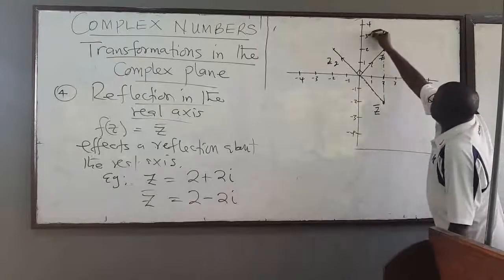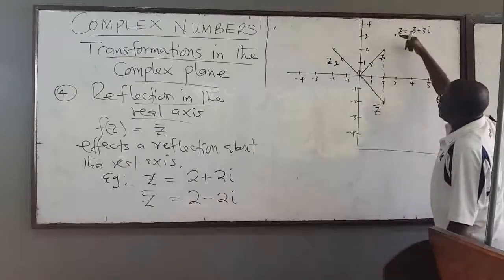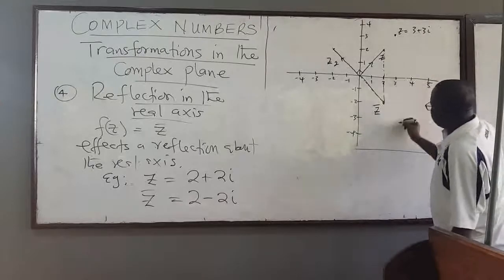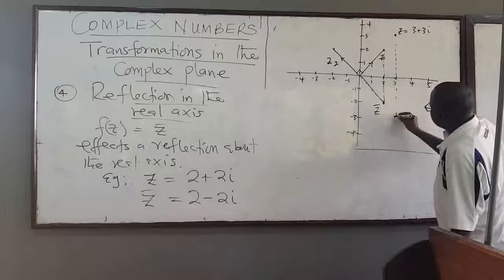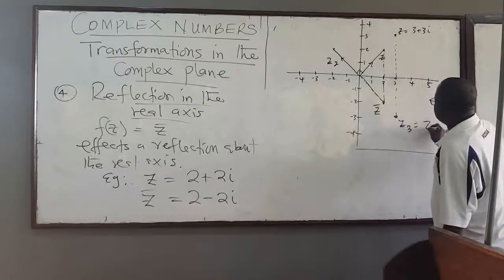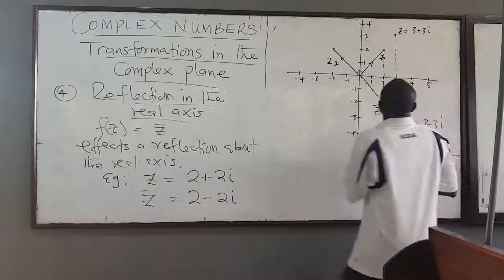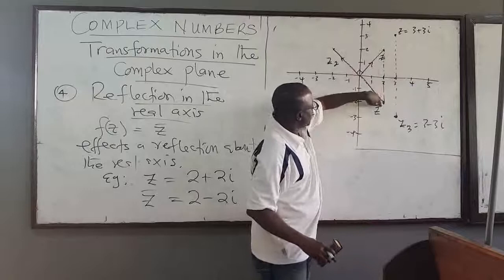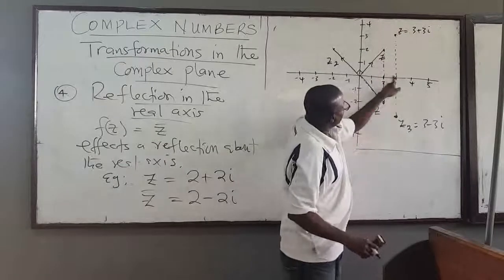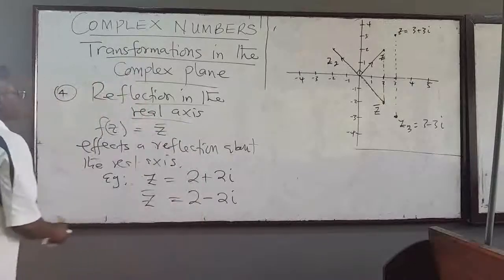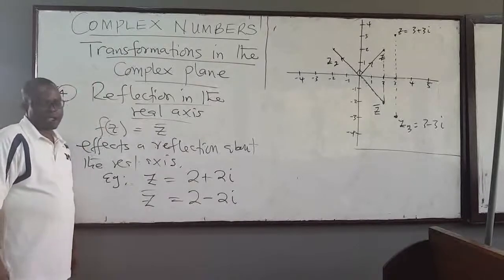For instance, if z = 3 + 3i, taking the conjugate gives 3 − 3i, which is the reflection about the real axis. Whenever you take the conjugate of a complex number, you are reflecting about the real axis. If you then also multiply by a constant alpha, you are reflecting and at the same time scaling — enlarging or reducing by factor k.